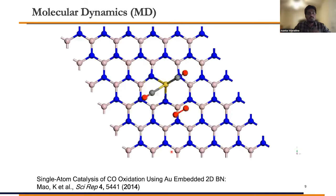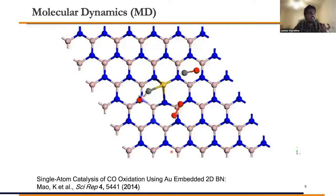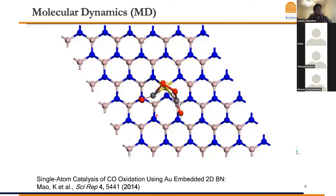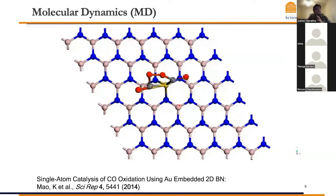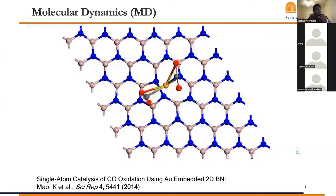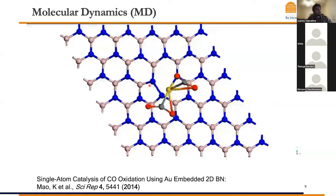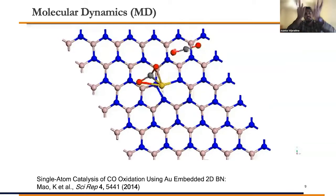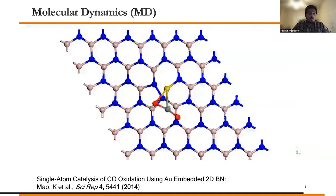Let's see a molecular dynamics simulation to understand what this is all about. This is a CO oxidation reaction — you see oxygen molecules in red and CO molecules in gray and red. When you oxidize, you form CO₂. You can see CO₂-like species forming over this boron nitride 2D layer. Now the CO₂ molecule is leaving the reaction surface. This is not a movie — it's a simulation with correct physics, created by solving the Schrödinger equation and Newton's equations of motion.